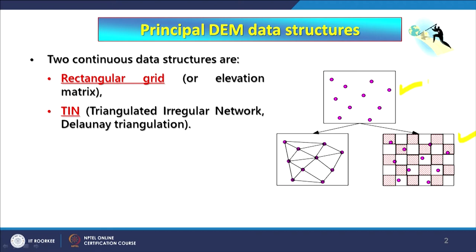An important point is what happens on the margins when TIN is developed. When using point data and creating a raster through interpolation, we can decide the extent and the resolution or cell size equivalent to ground. But in TIN, we have no control over the margins — it will go up to where the input data points are. We also have no control over resolution, because resolution is controlled by the triangles, which are adaptable to relief changes — giving us large triangles, small triangles, and so on.